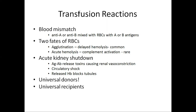A decrease in renal blood flow reduces GFR, resulting in decreased glomerular hydrostatic pressure and decreased urine output, leading to circulatory shock. Hemoglobin precipitation from hemolyzed RBCs in the renal tubules can also block glomerular tubules, which may lead to acute tubular necrosis.